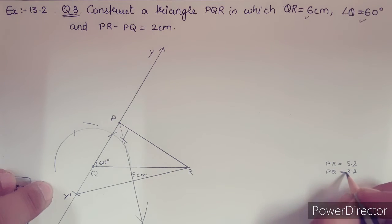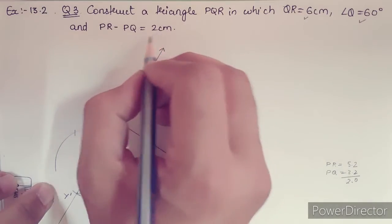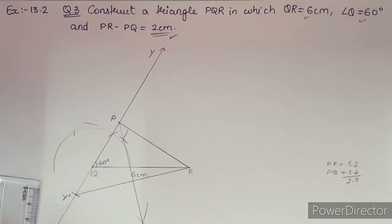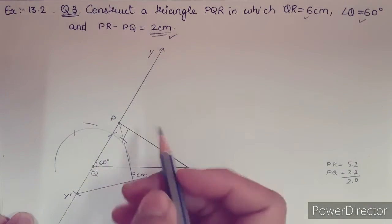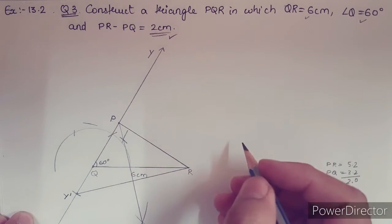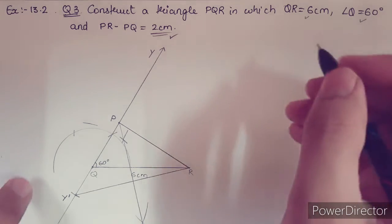PR is 5.2 and PQ is 3.2. If you do the subtraction you are going to get 2. So we have got 2 cm as the difference. This is how you need to construct, and this is the answer PQR. Now let us write down the steps of this construction.